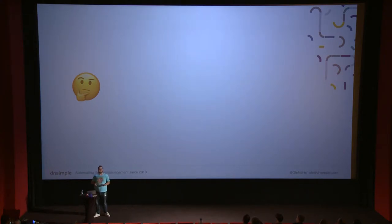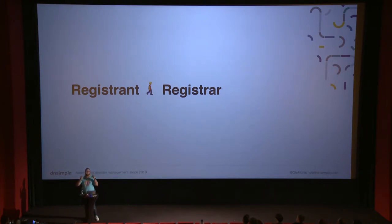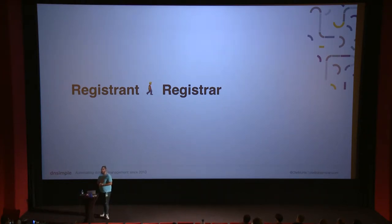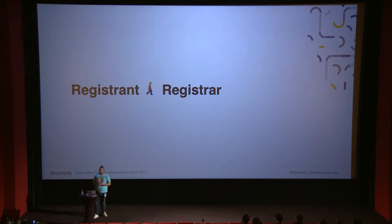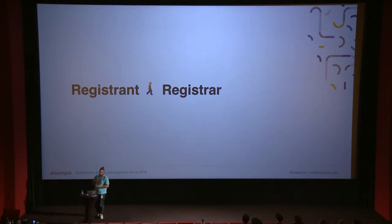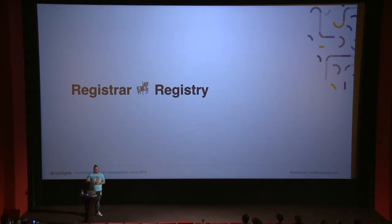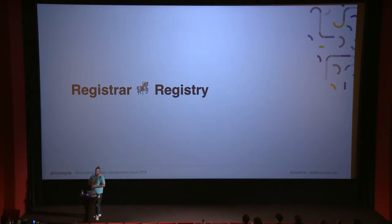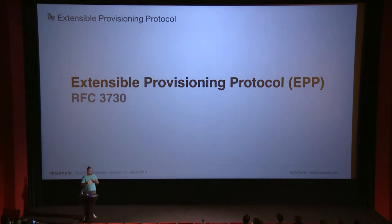But how does registering a domain work? What is happening there? To explain this, you need to know about the three R's of domain registration and management. The first R is the registrant — that's us in the example. A registrant always talks to a registrar, and the registrar helps registries sell domain names to customers. There's no way to directly talk to a registry. DNSimple is a registrar, so I know what's going on behind the scenes.